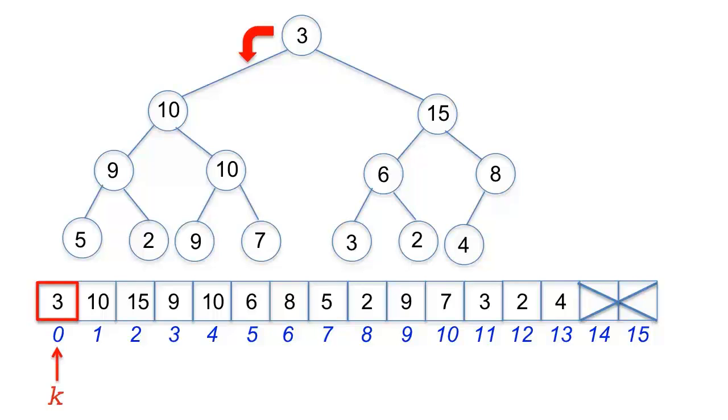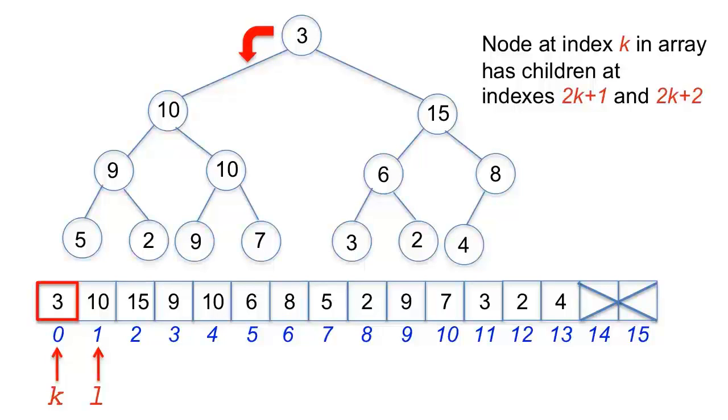Index l is the position of the left child of 3 at 2k plus 1, which is 1, and index r is the position of the right child of 3 at 2k plus 2, which is 2. The items 10 and 15 at these positions are compared. Another index max will point to the maximum of the children, which is 15 in this case. The k item 3 is then compared against the max item 15, and because it is less, is swapped with 15.